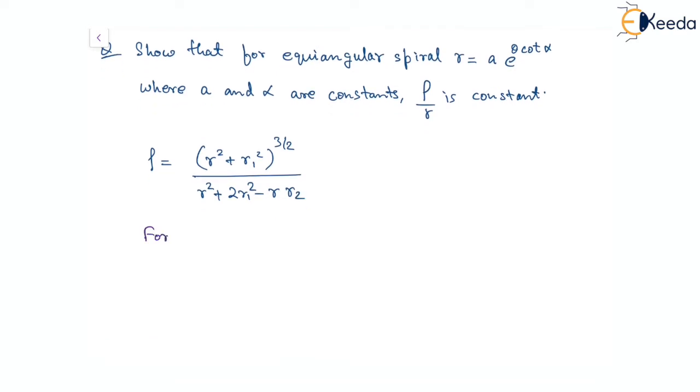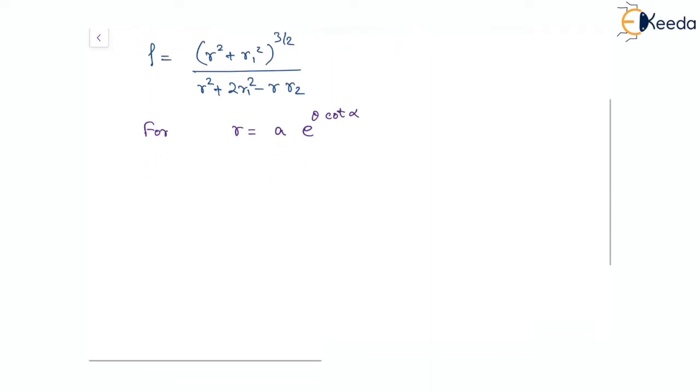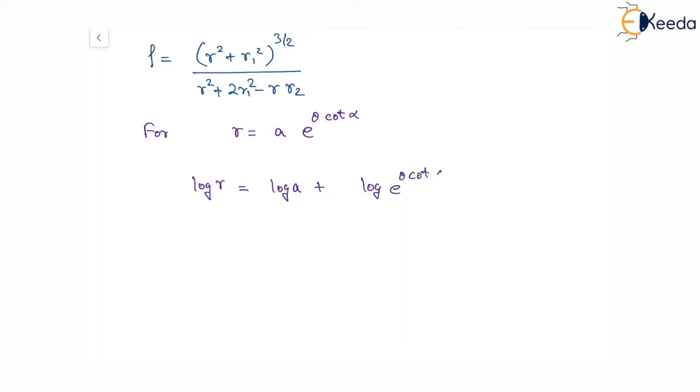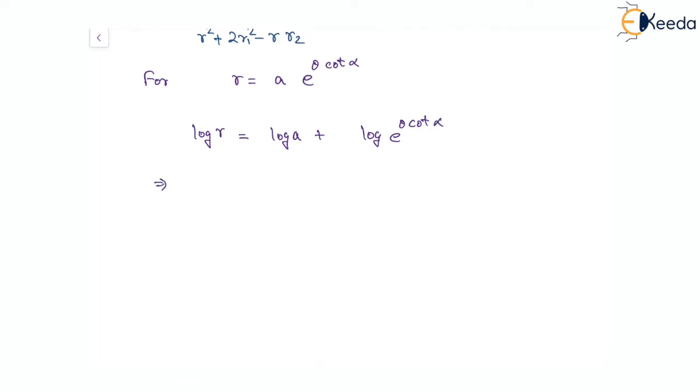With r equal to a times e to the power of theta cot alpha, if we take log on both sides we will have log r equals log a plus log of e to the power of theta cot alpha. Since log and exponential functions are inverse of each other, we get log r equals log a plus theta times cot alpha.